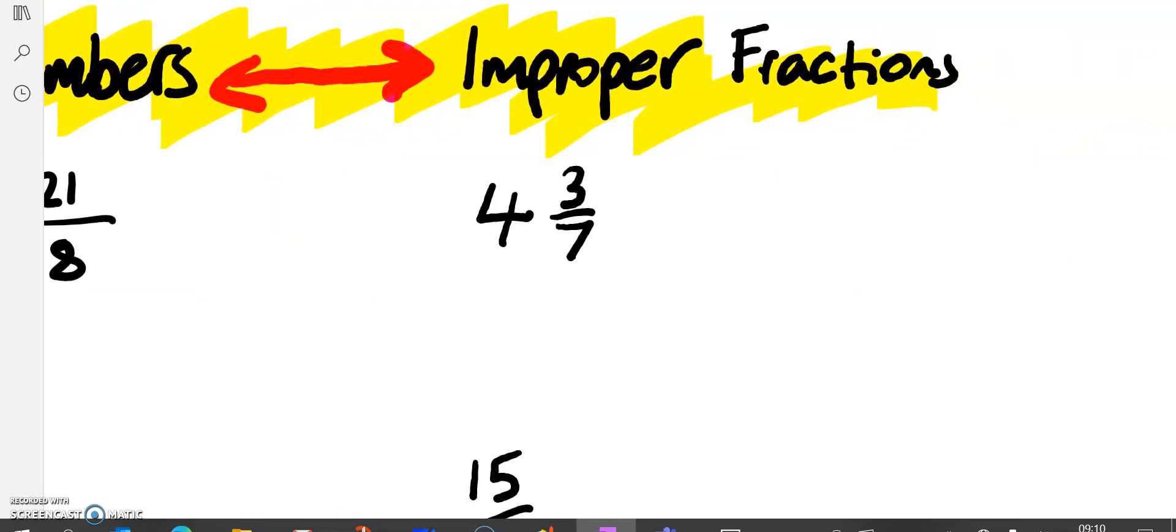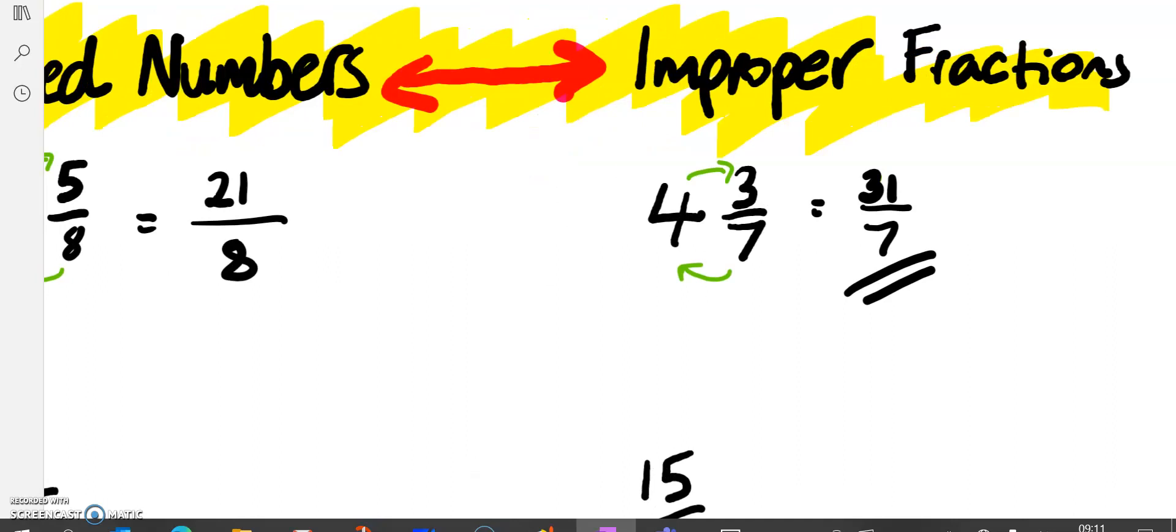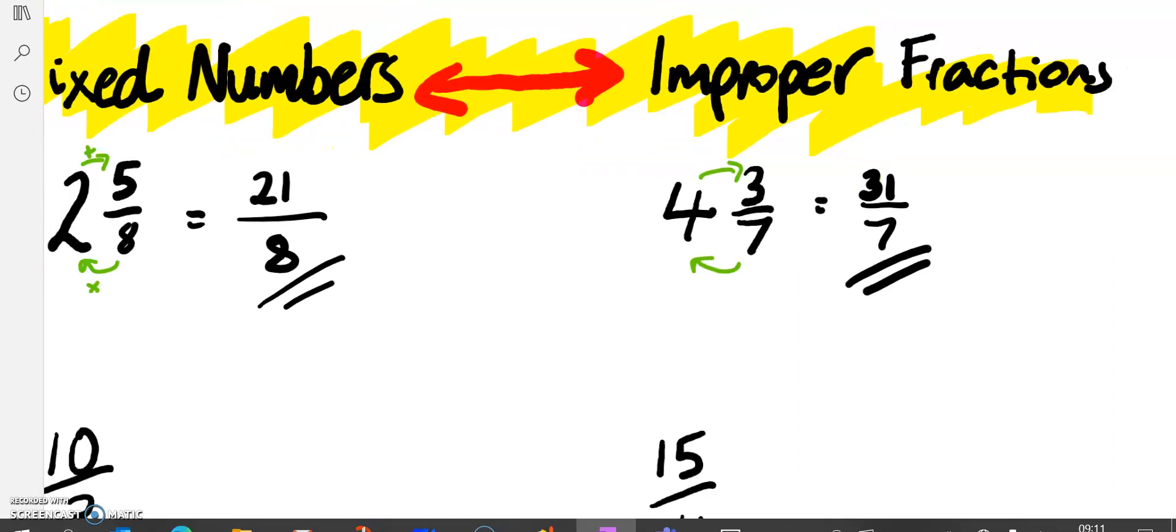4 and 3 sevenths. We want to figure out how many sevenths is that all together. We multiply the 7 and the 4 and we'll get 28, and then we add on the numerator. So that's 28 plus 3, which is 31. So as an improper fraction, we're going to have 31 over 7. These answers here are improper fractions because the numerator is bigger than the denominator.